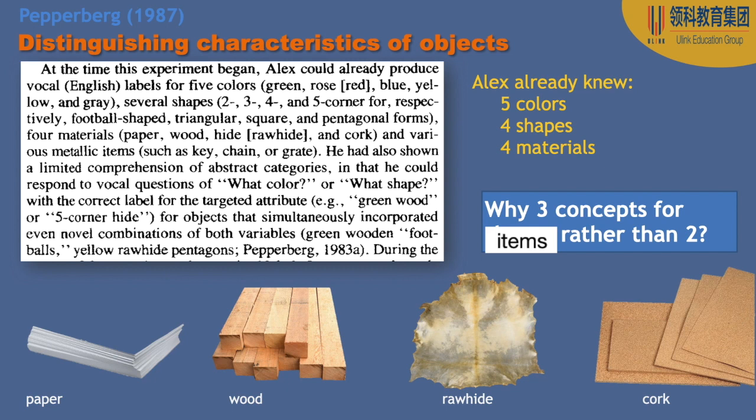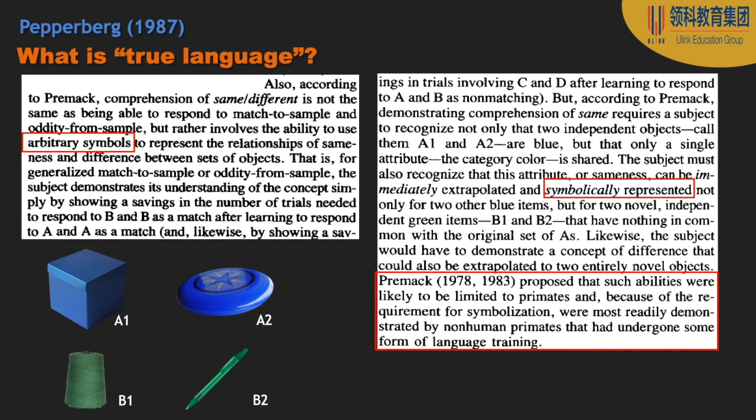We have three concepts he's going to be tested on rather than two. Later we can figure out why it's important to have three concepts rather than two when we get to the probe questions. The beginning of the study goes back to what we discussed: what is true language? Keep reminding yourself that language is something that's arbitrary and symbolic.